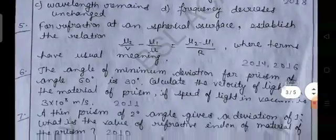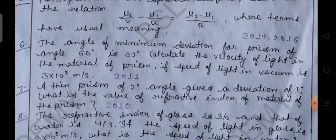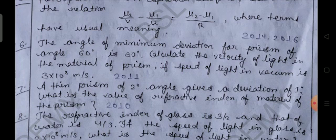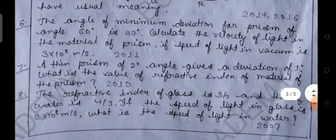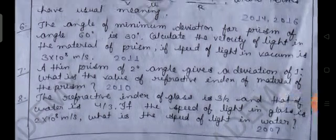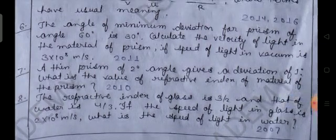2014 and 2016. Next: The angle of minimum deviation for prism of angle 60 degrees is 30 degrees. Calculate the velocity of light in the material of prism if speed of light in vacuum is 3×10^8 meter per second. This is one of the numerical problems.